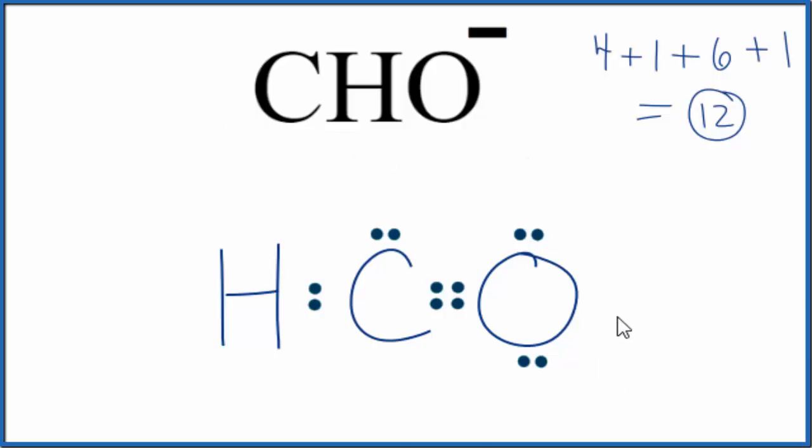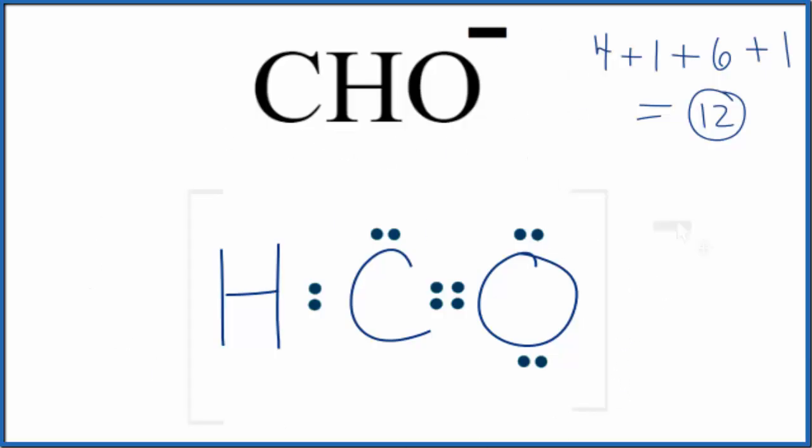We should put brackets around it, and then a negative sign to show that it's an ion. So that's our Lewis structure for CHO minus.